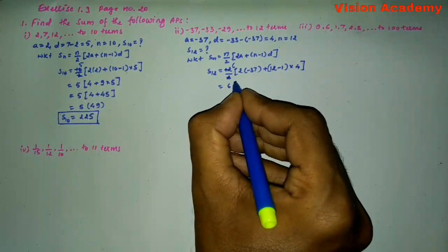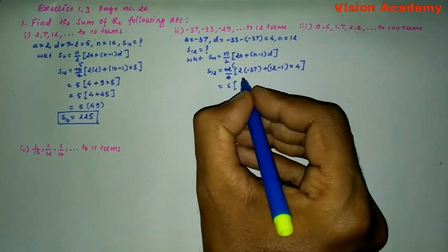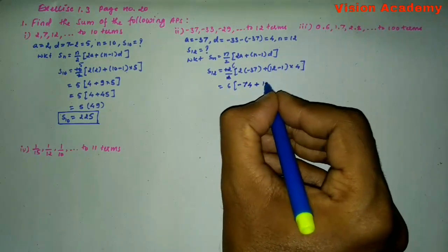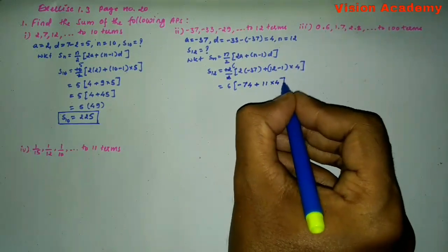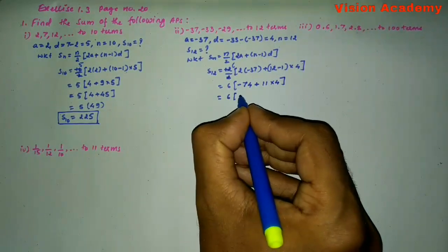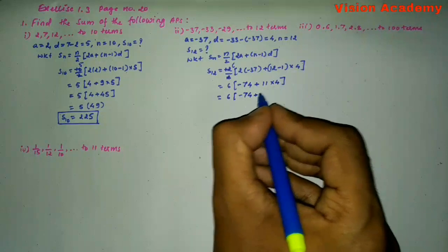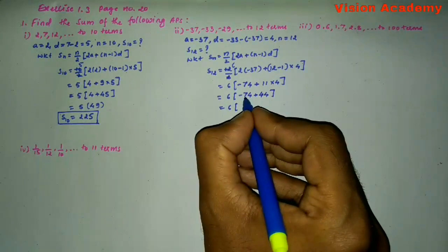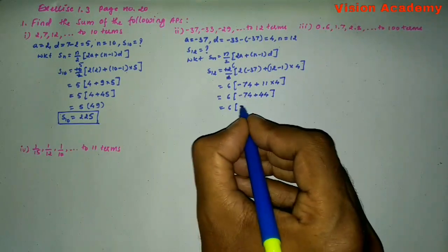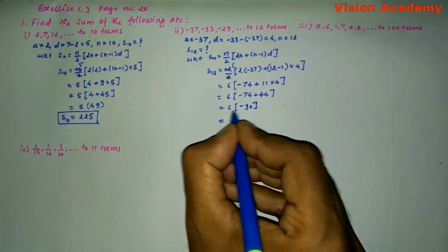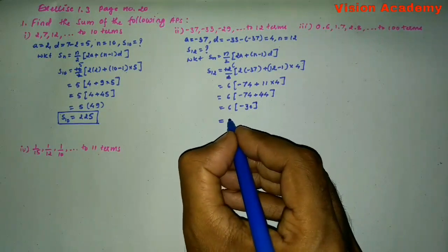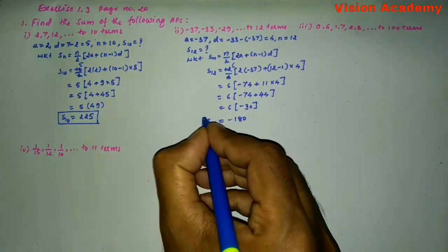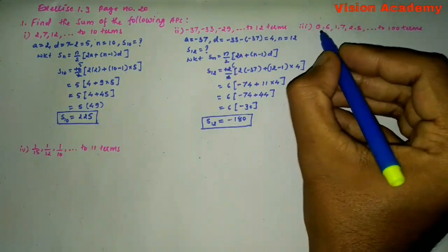Here, 6 into 2 minus 74, plus 12 minus 1 is 11 into 4. Here, 6 into minus 74 plus 44 gives us minus 30. Here, 6 into minus 30 is minus 180. Therefore, S_12 is equal to minus 180.